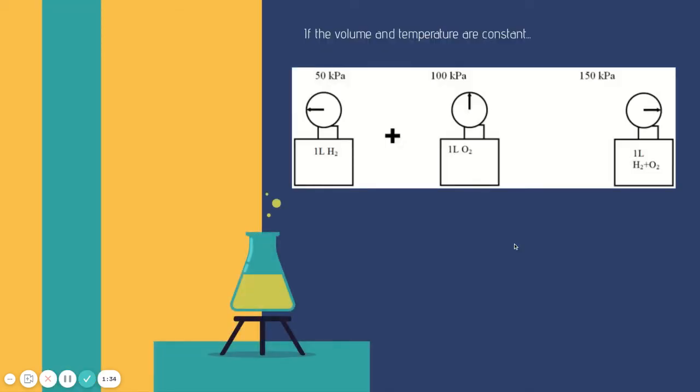That's not necessarily how it works though. If volume and pressure are constant again you're just adding, here's an example of 50 kilopascals plus 100 kilopascals equals 150 kilopascals. So P1 plus P2 equals P total.